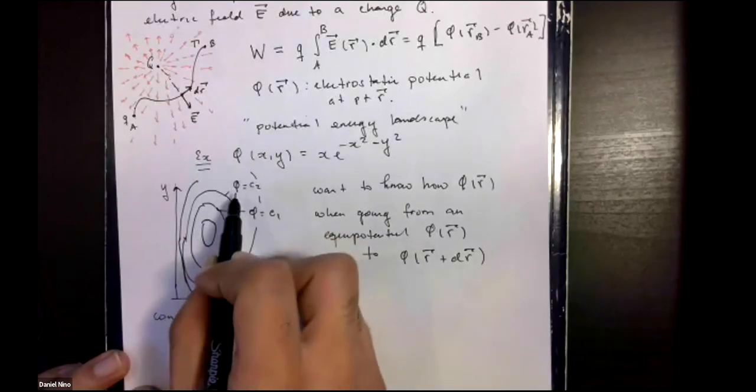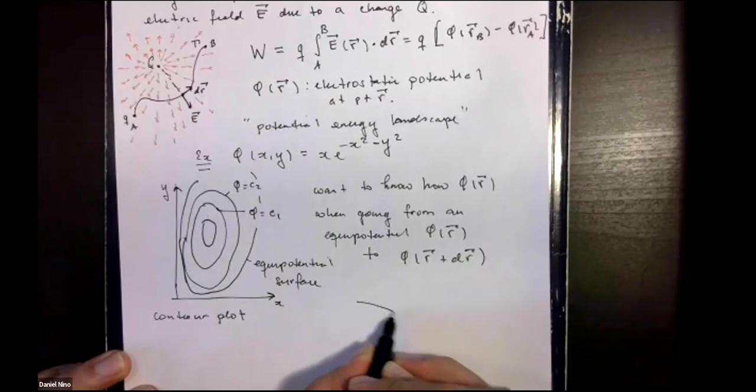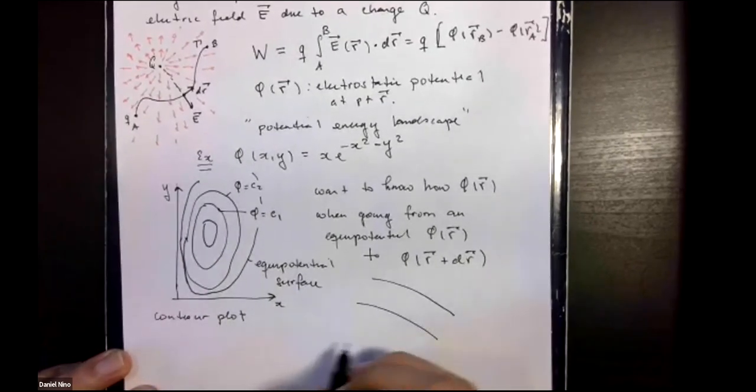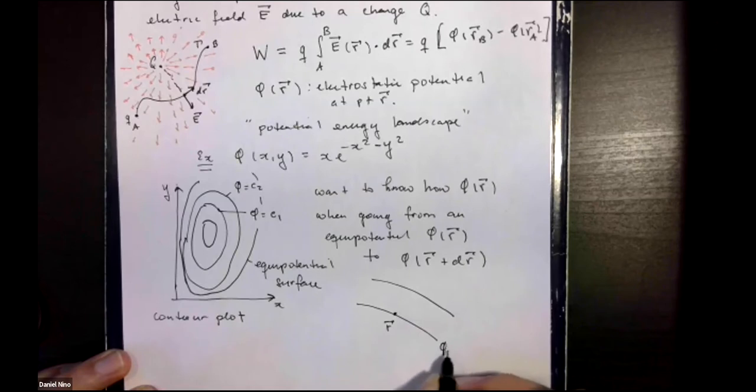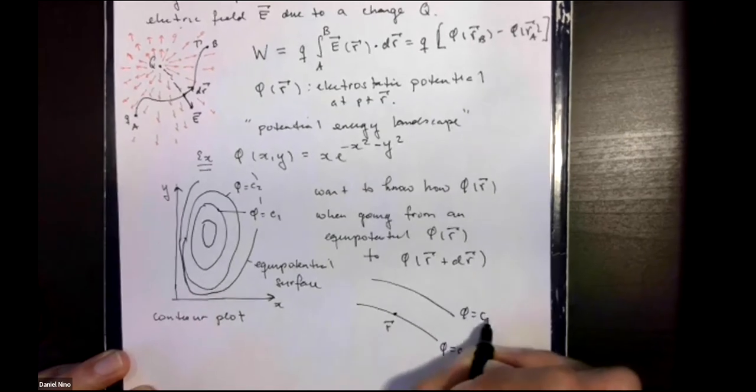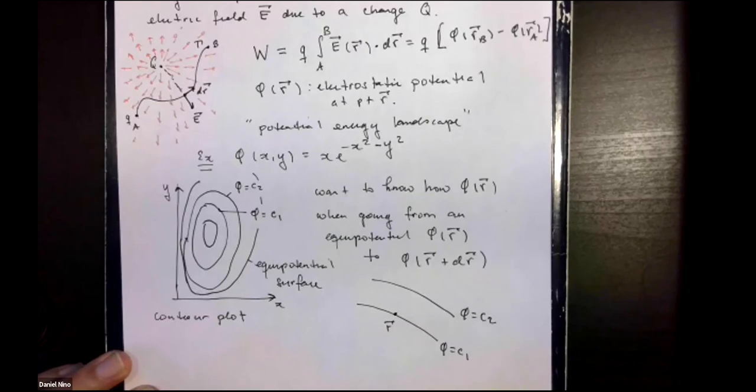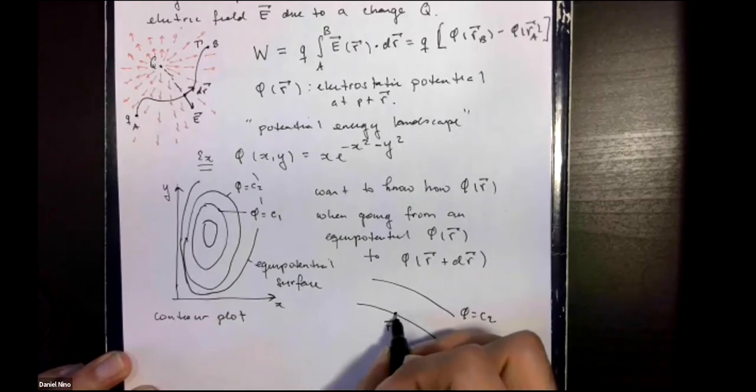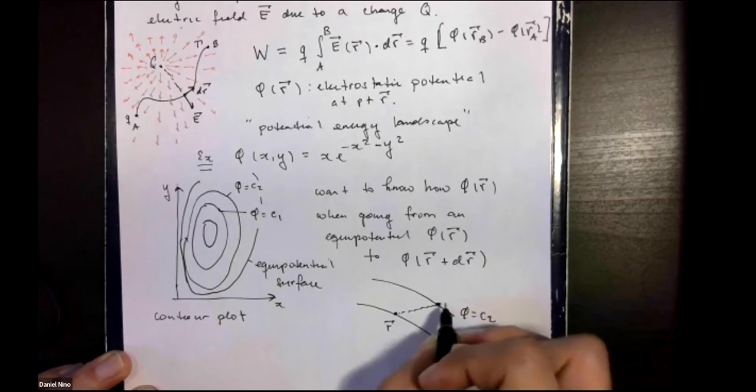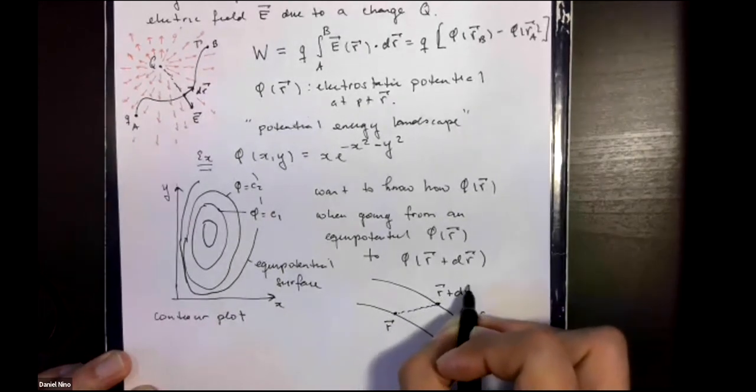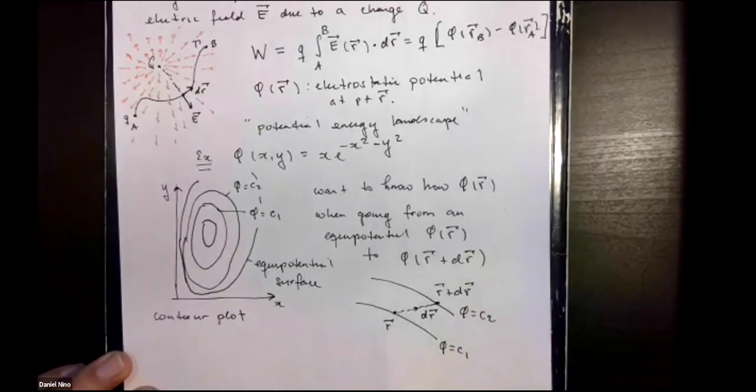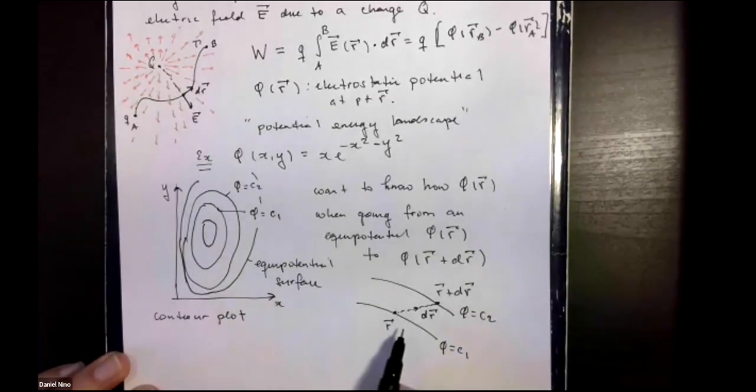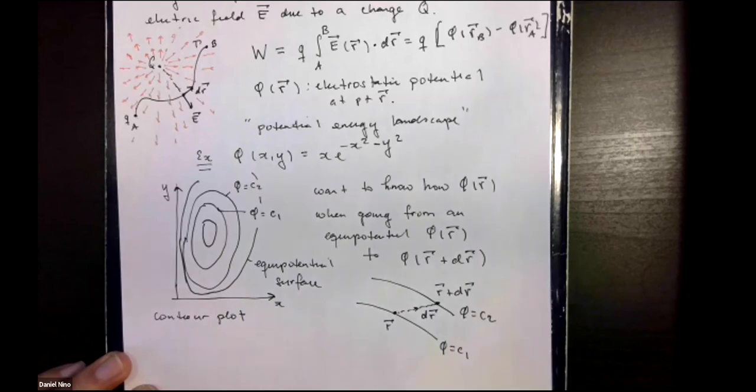So if we zoom in into here, we might have something like this. Let's say we're over here at position r, this is one equipotential, this is another equipotential, and we want to go over here. So we've displaced by some vector dr. In other words, you want to know the work that's needed to go from this equipotential to this equipotential over here.